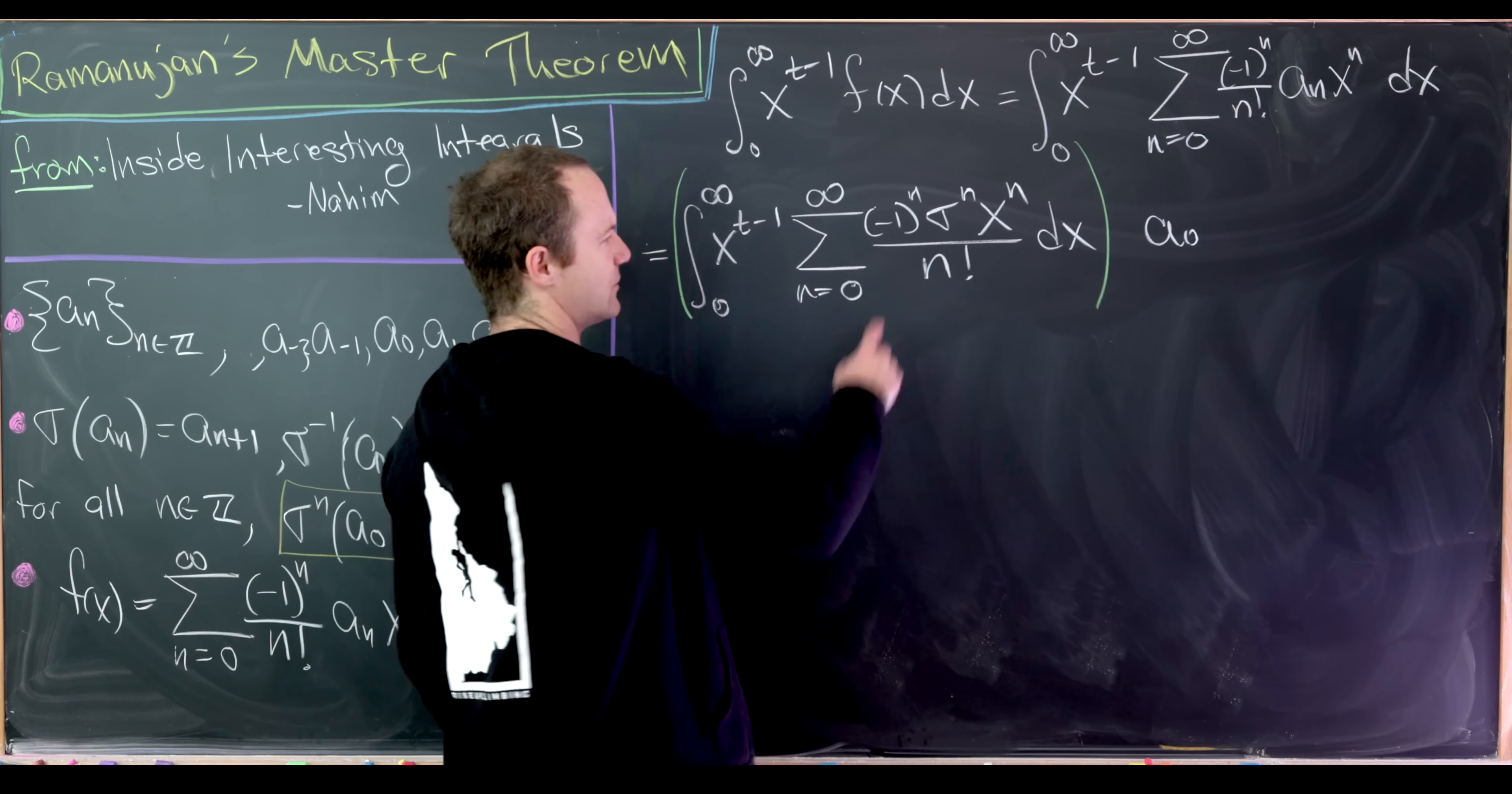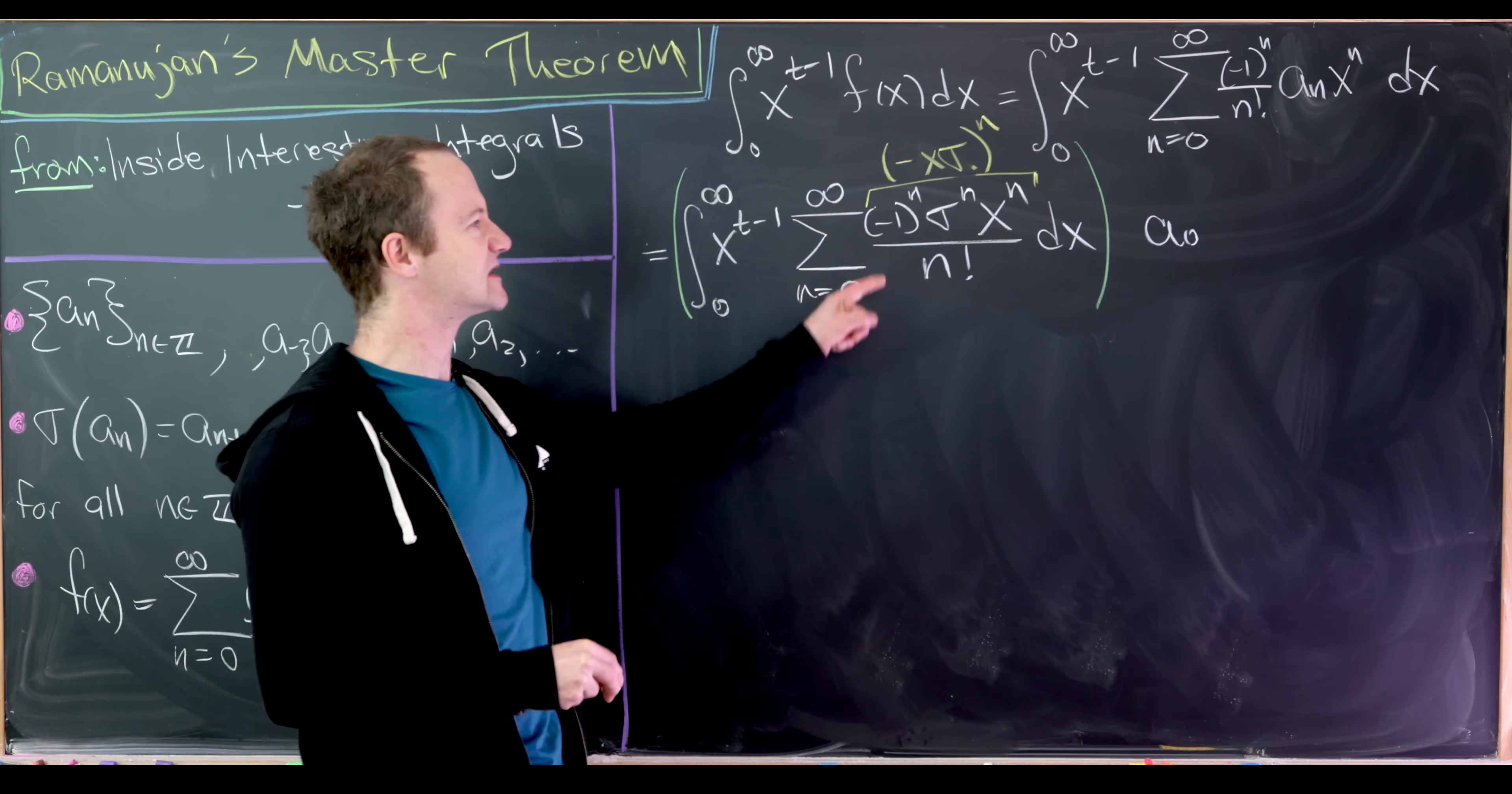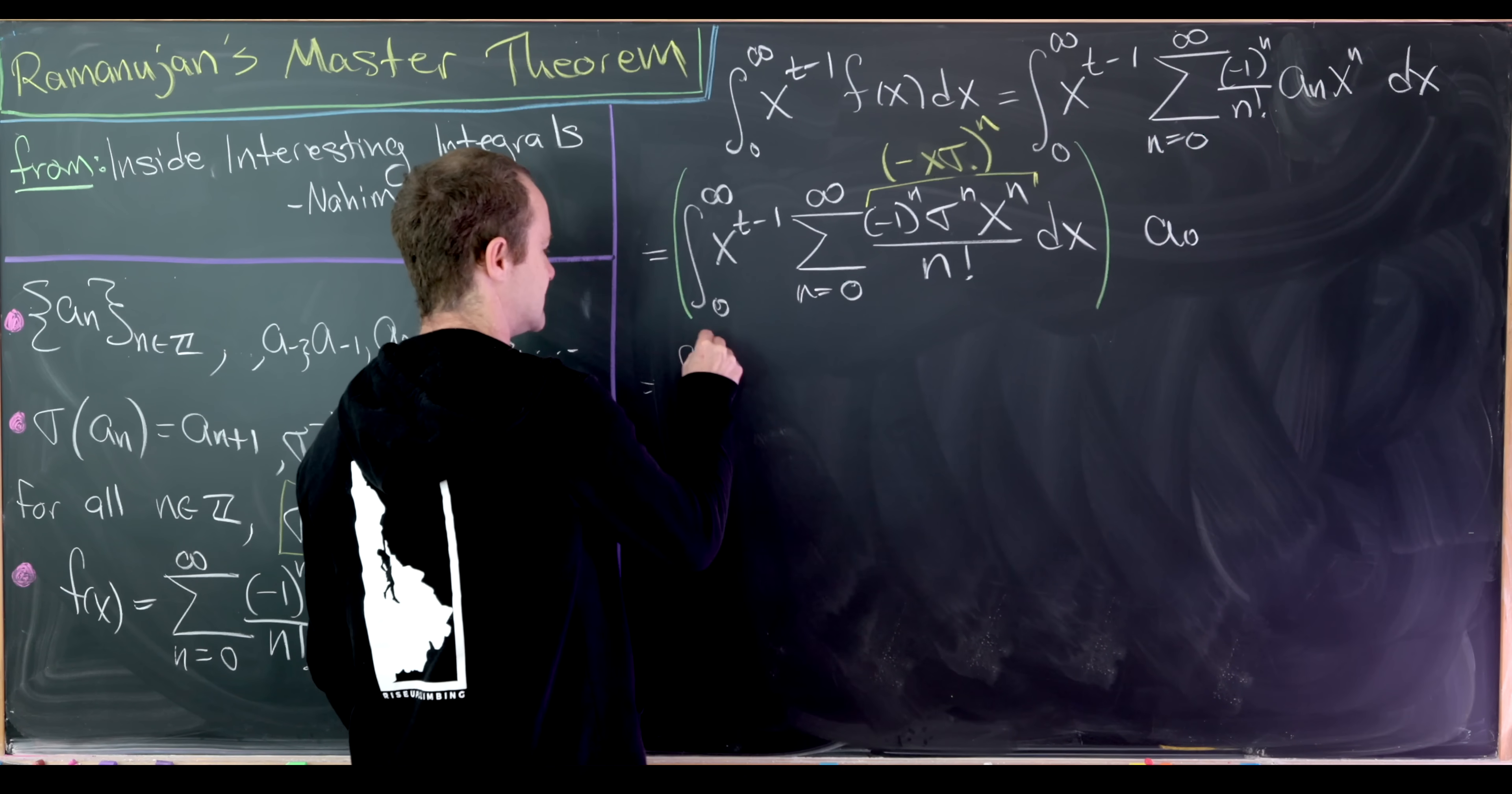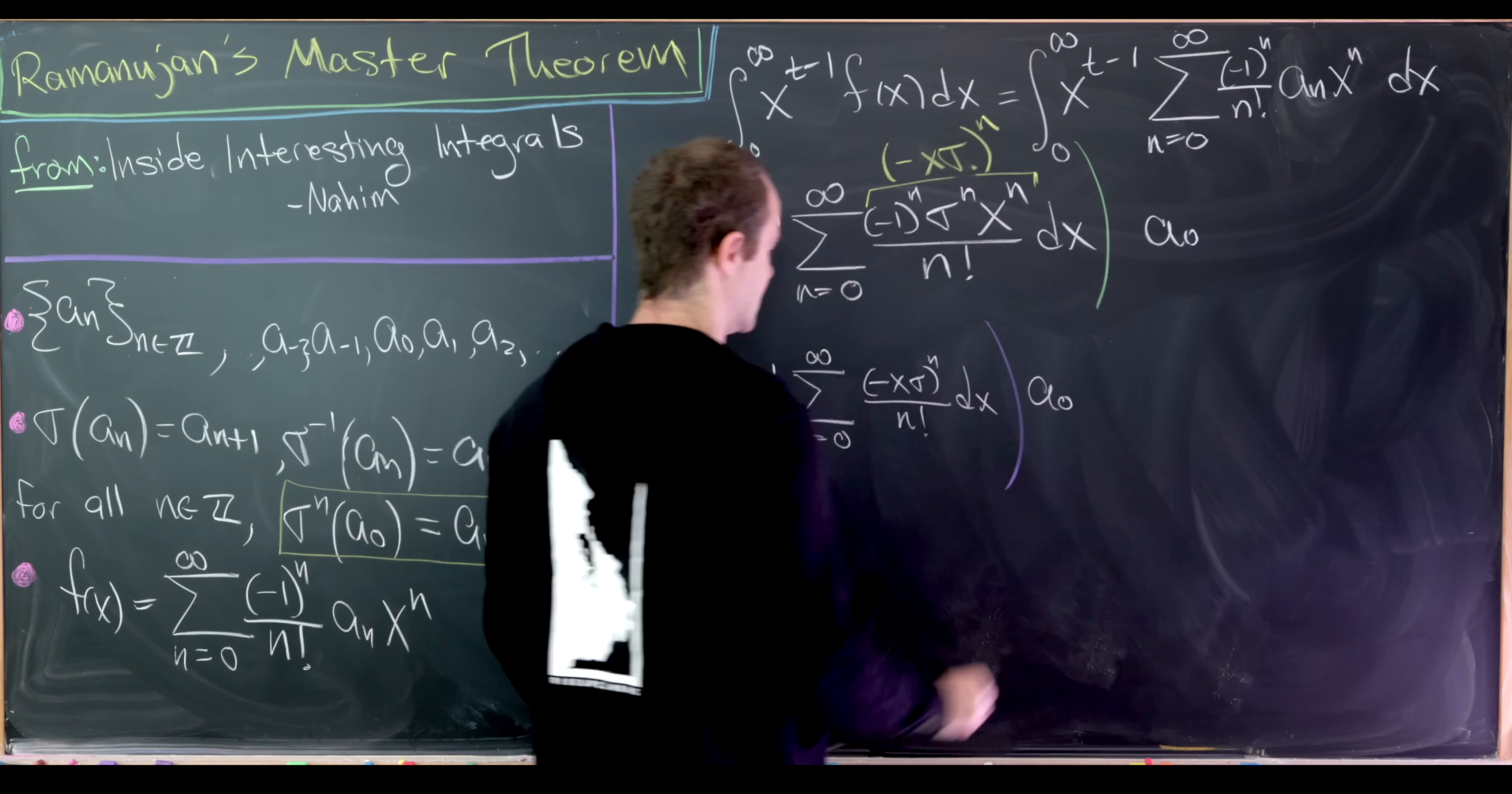Next up, let's notice that we've got a bunch of stuff to the nth power right here. So we might as well put all of that together. In fact, this will be equal to (-σx) all to the n power. Or maybe the better way to write it would be (-xσ) all to the nth power. Just keeping in mind that maybe the sigma should really be to the right. It should maybe even be to the right over here, although I won't fix that because that's the thing that's attacking a_0. It doesn't do anything to x. So now let's rewrite that real quick. So we still have the integral from 0 to infinity x^{t-1}. And now we'll have our sum as n goes from 0 up to infinity of (-xσ)^n over n! dx. And then just as before, this whole operator is acting on a_0.